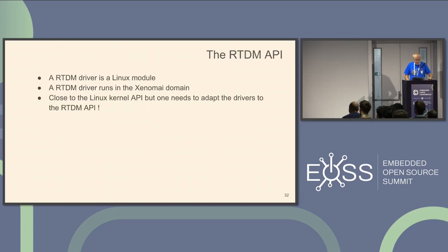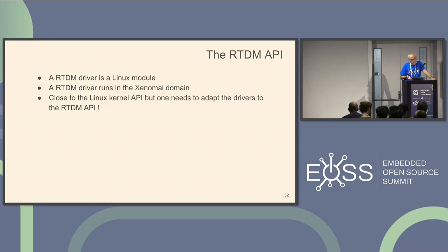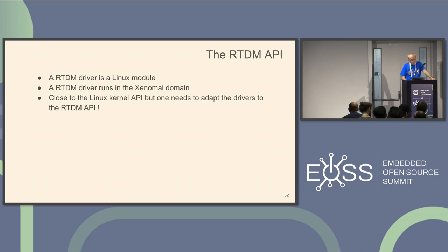The RTDM API is a driver model — it's a Linux module, but it runs in the Xenomai domain. You can load it with insmod or modprobe. But you need to adapt the driver to the RTDM API, as I said before.